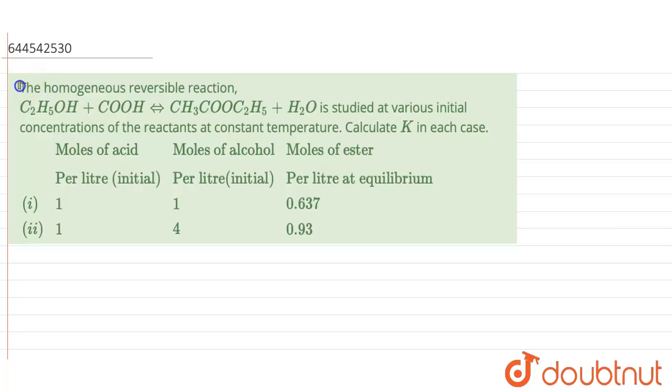It is given that the homogeneous reversible reaction, C2H5OH plus COOH giving CH3COOC2H5 plus H2O, is studied at various initial concentrations of the reactants at constant temperature. We need to calculate K in each case.